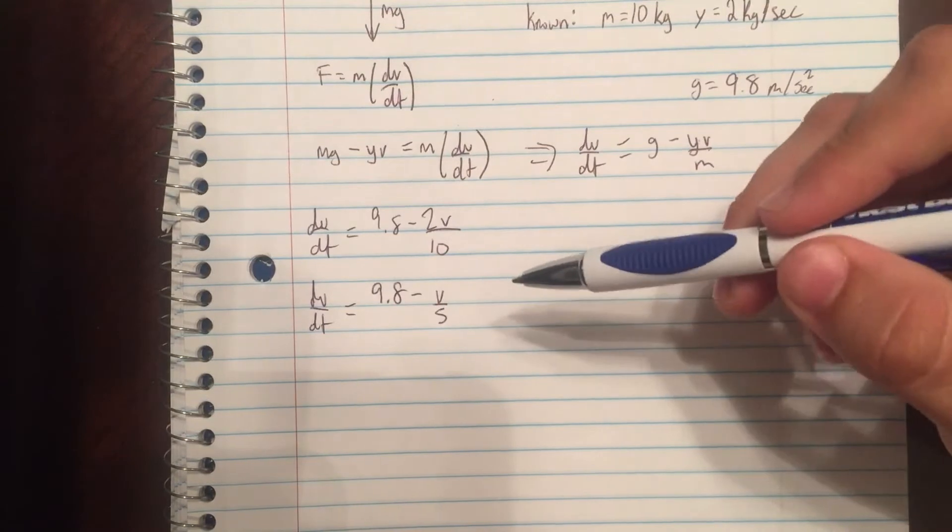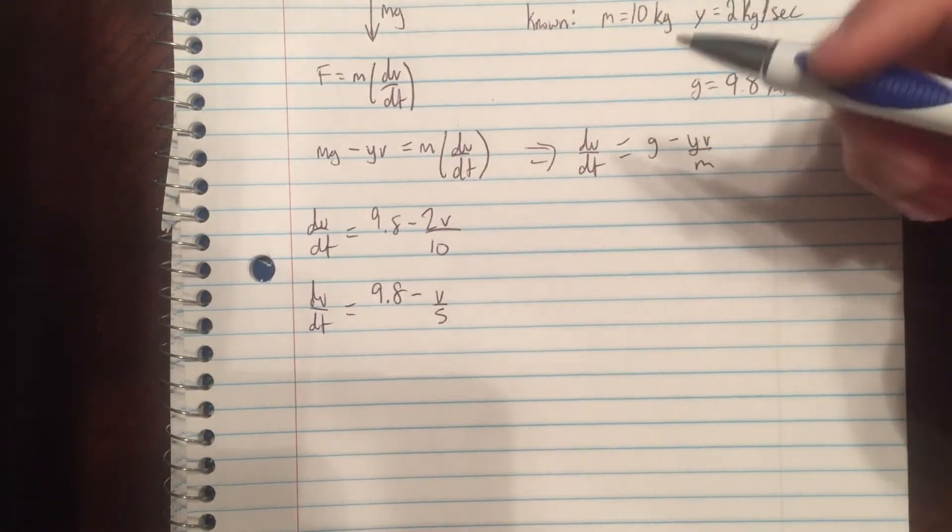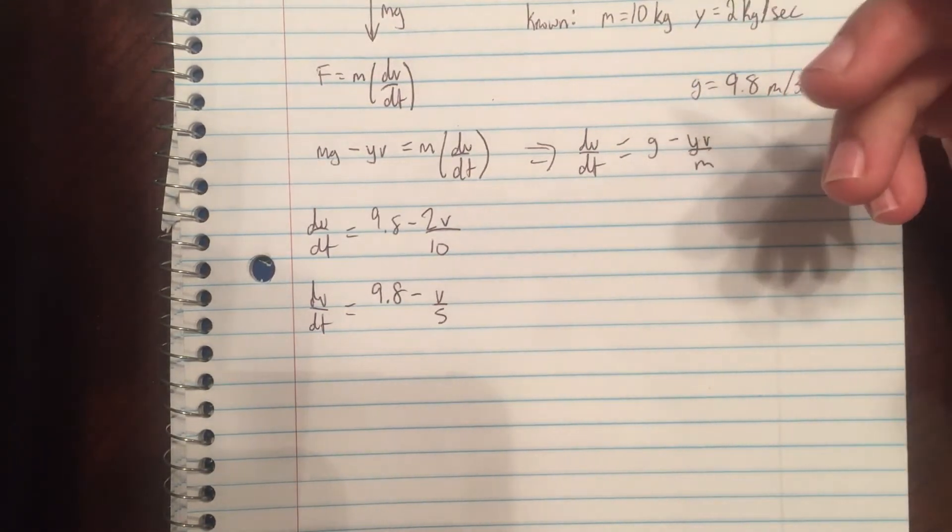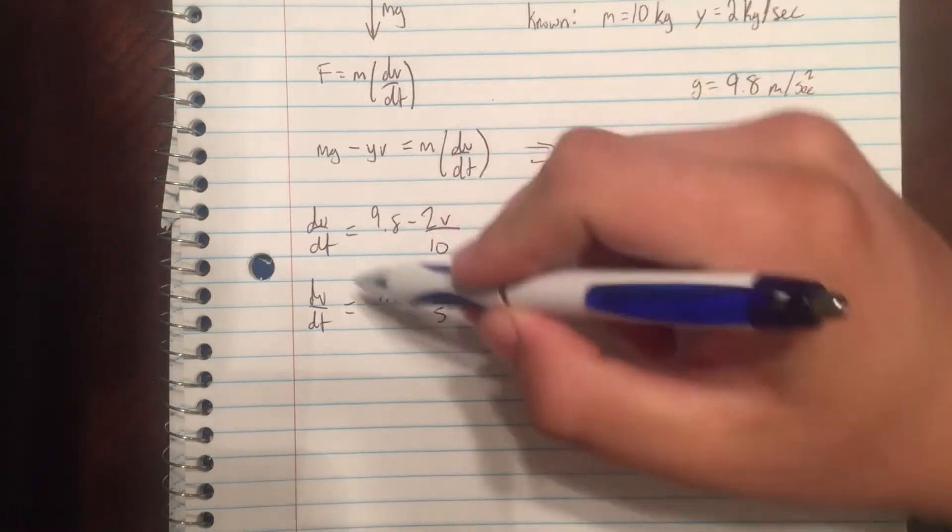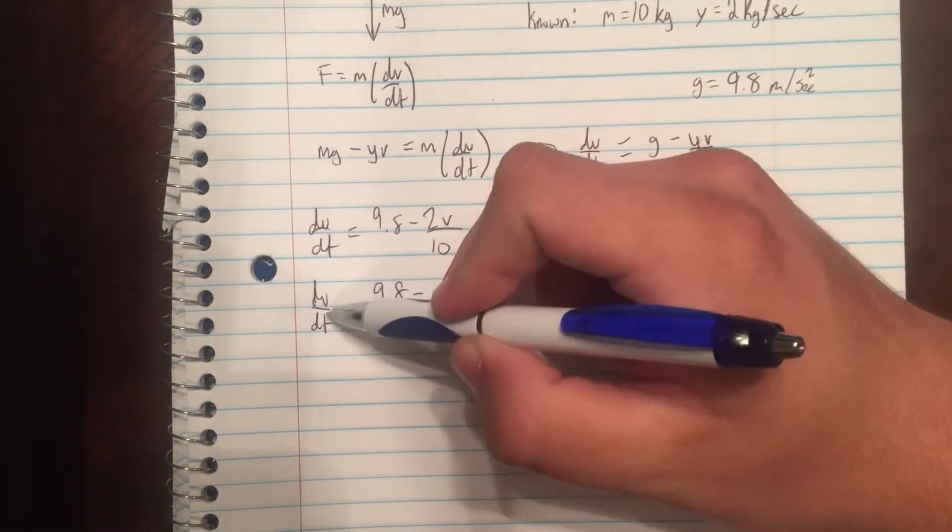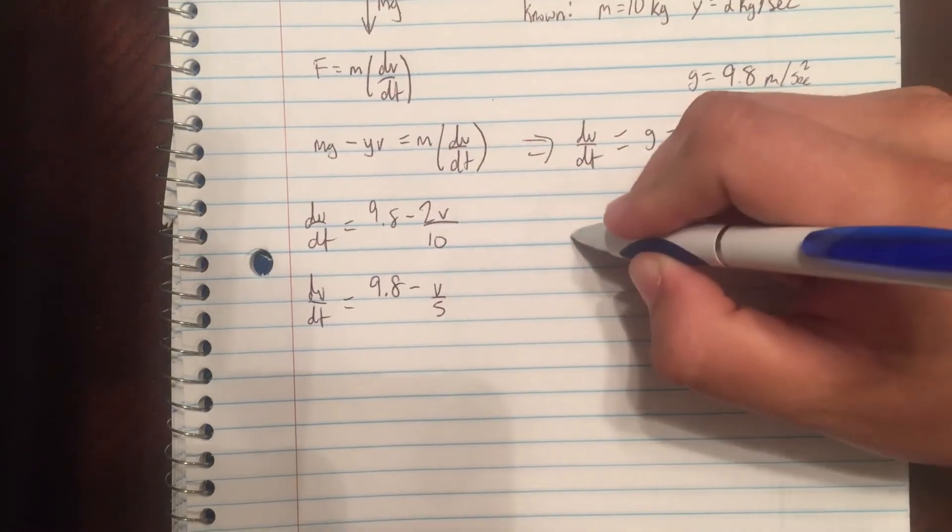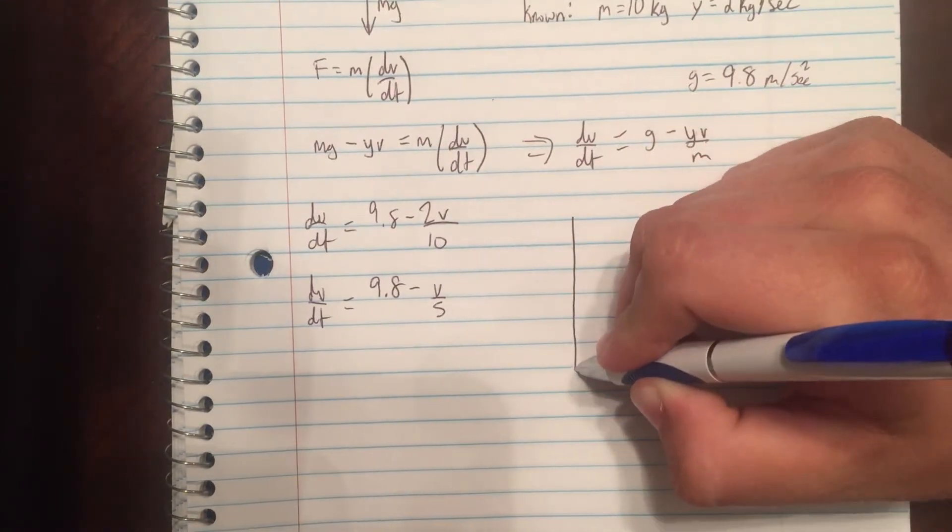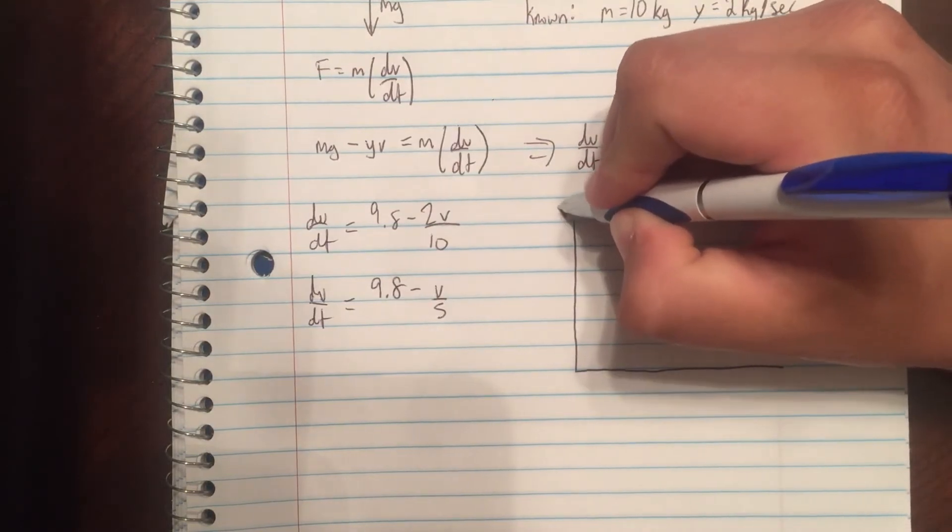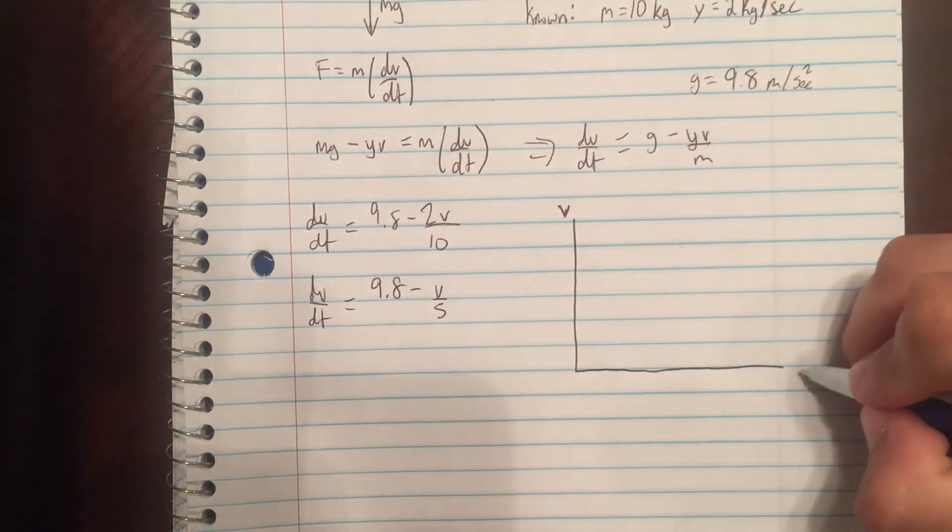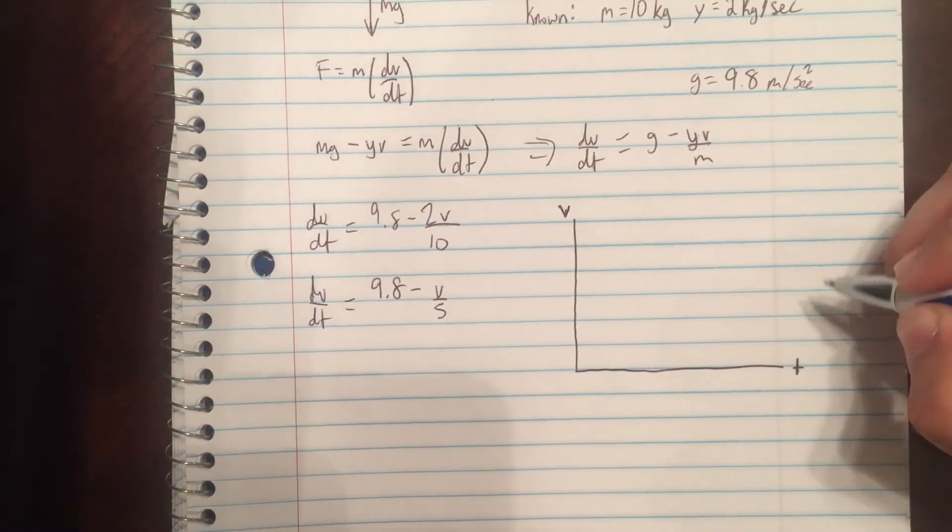We will eventually solve that in the next section. But what we can do right now is create a slope field or a direction field, called both terms. We can see where the function is going as time goes on. We notice that we have the function v as going to t, so we'll make a graph here with velocity on the y-axis and t on the x-axis.